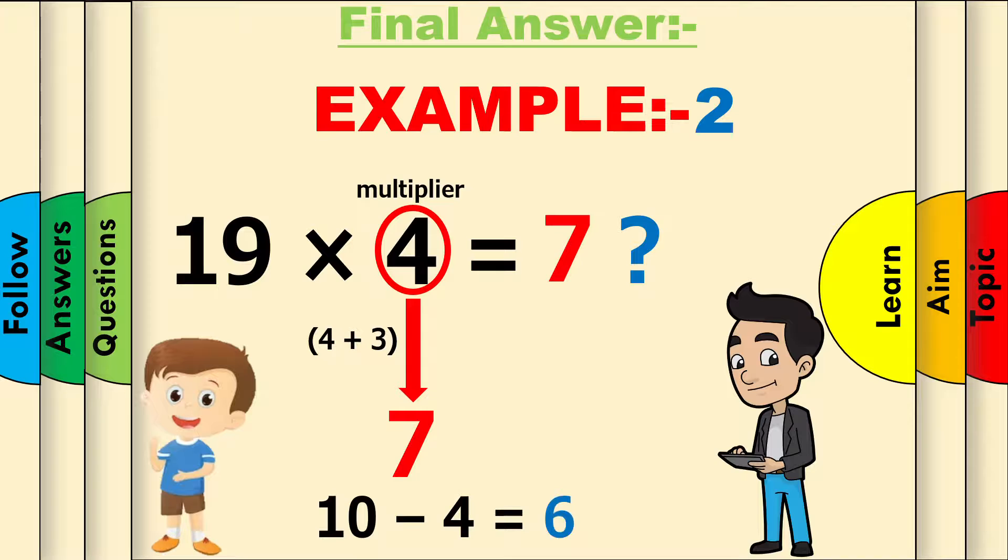Now we need to do 10 minus the multiplier. The multiplier is 4. So do 10 minus 4, which is 6. And replace this in the answer.